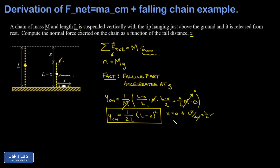Another check: when x = l, the entire chain is on the table at y = 0, so y_cm should be zero. Plugging in x = l gives (1/(2l)) * 0² = 0. ✓ The formula is doing what it's supposed to do. Now our goal is to get the center of mass acceleration, so we start taking time derivatives.